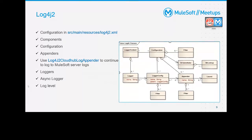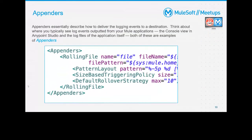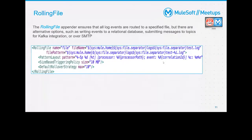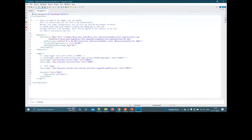Now let's explore the components of Log4j2. The first component is Appenders. Appenders are essentially the destination — where you want to send or create your logs. This example appender instructs Log4j2 to create a rolling file. The file name uses a system variable like mule.home. Appenders essentially describe how to deliver logging events to a destination.